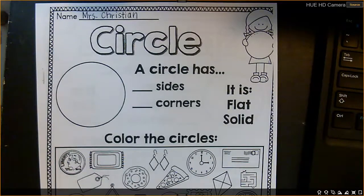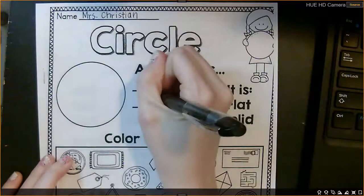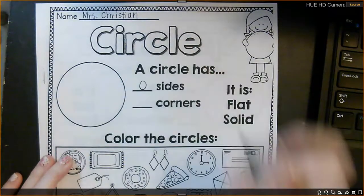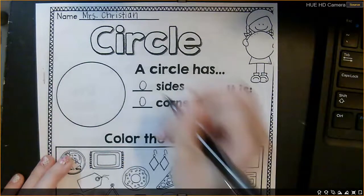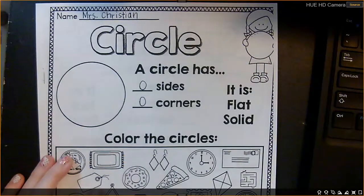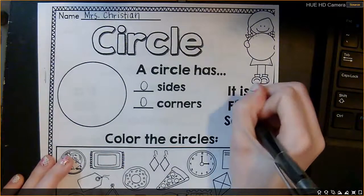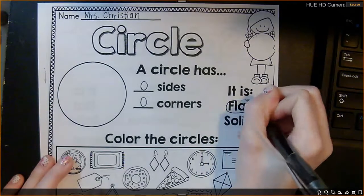A circle has zero sides and it has zero corners. And a circle, since this is a 2D shape, it is a flat object, so we're going to circle flat.